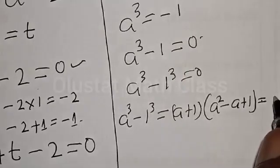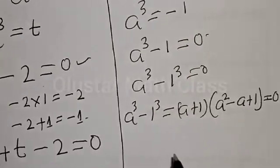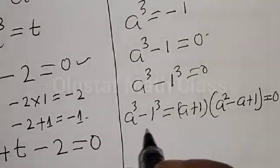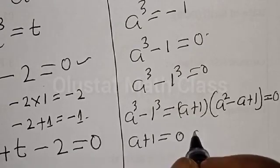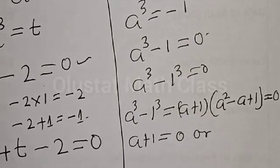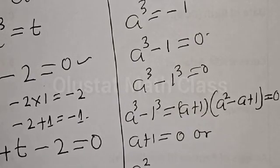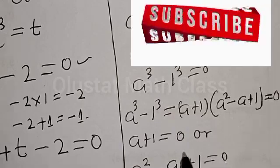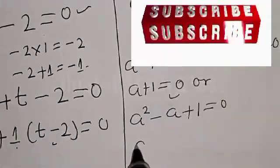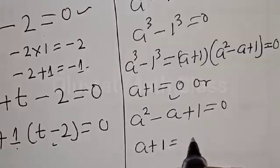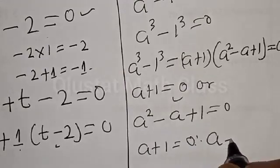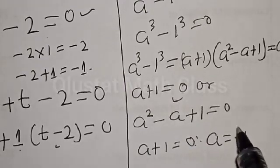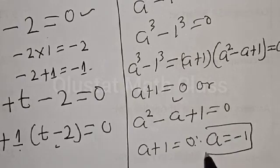From the factored form, we have A plus 1 equals 0, or A squared minus A plus 1 equals 0. From A plus 1 equals 0, therefore A is equal to minus 1. That is another value of A.